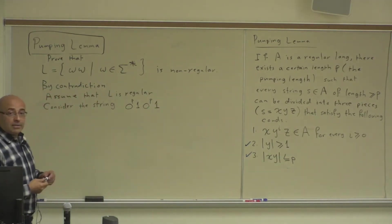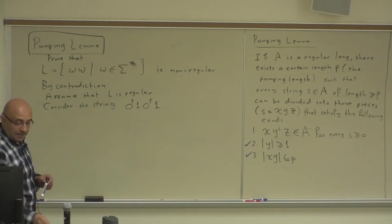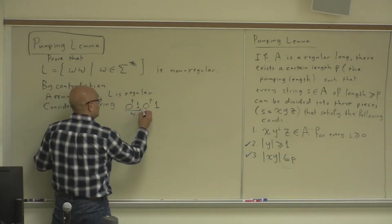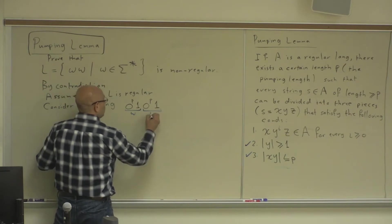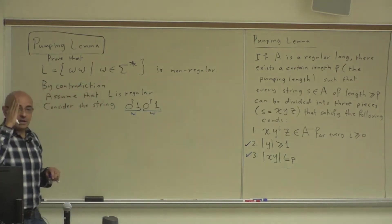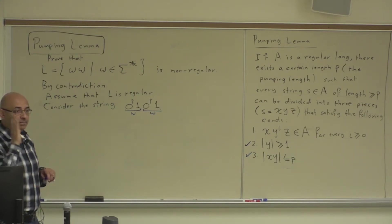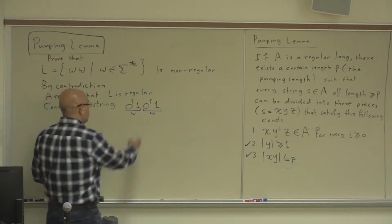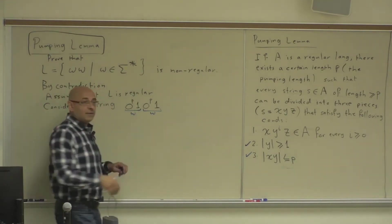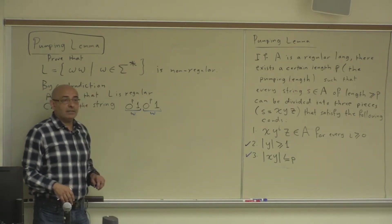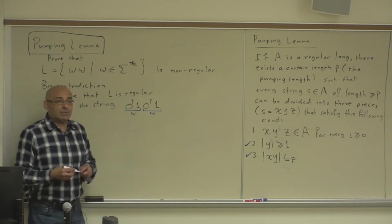Does 0^P 1 0^P 1 belong to the language? Yes. It has two identical halves — this is the first w and this is the second w. So it consists of two identical substrings or two identical pieces. You can split it in half and get two identical halves. So this string belongs to the language.